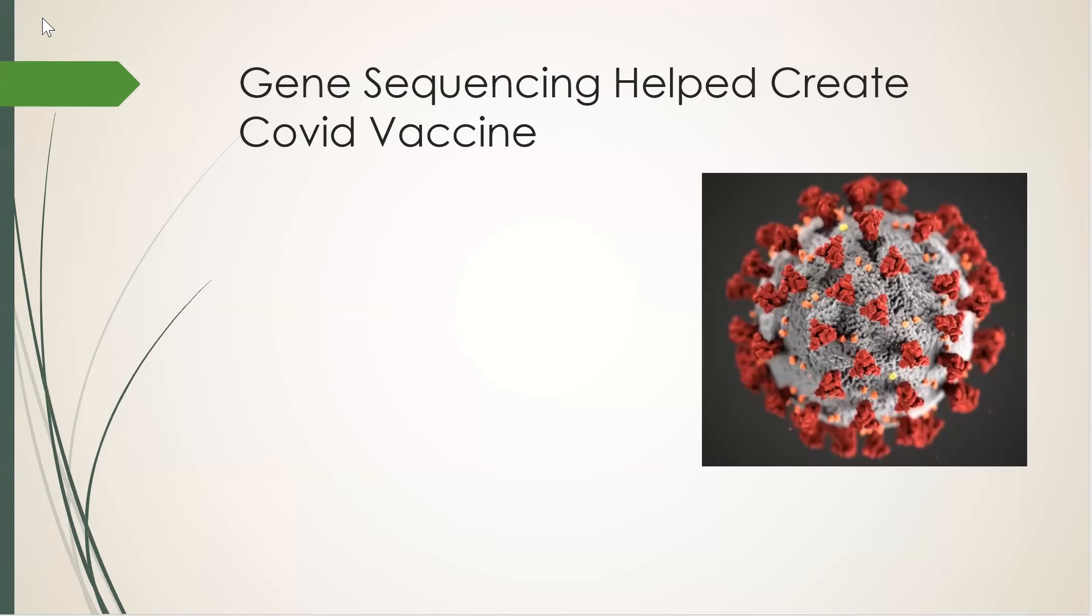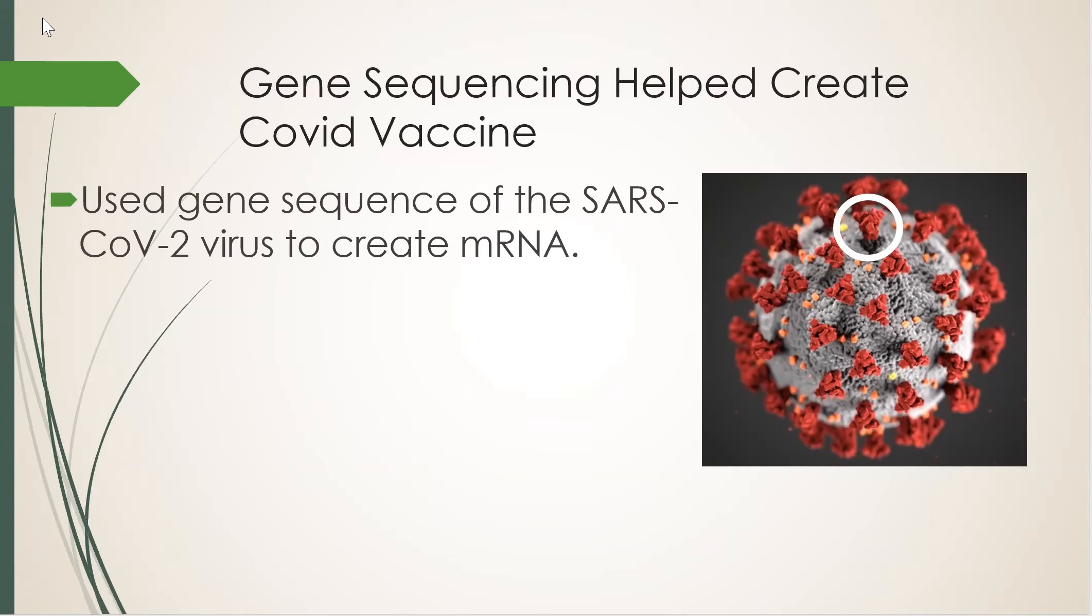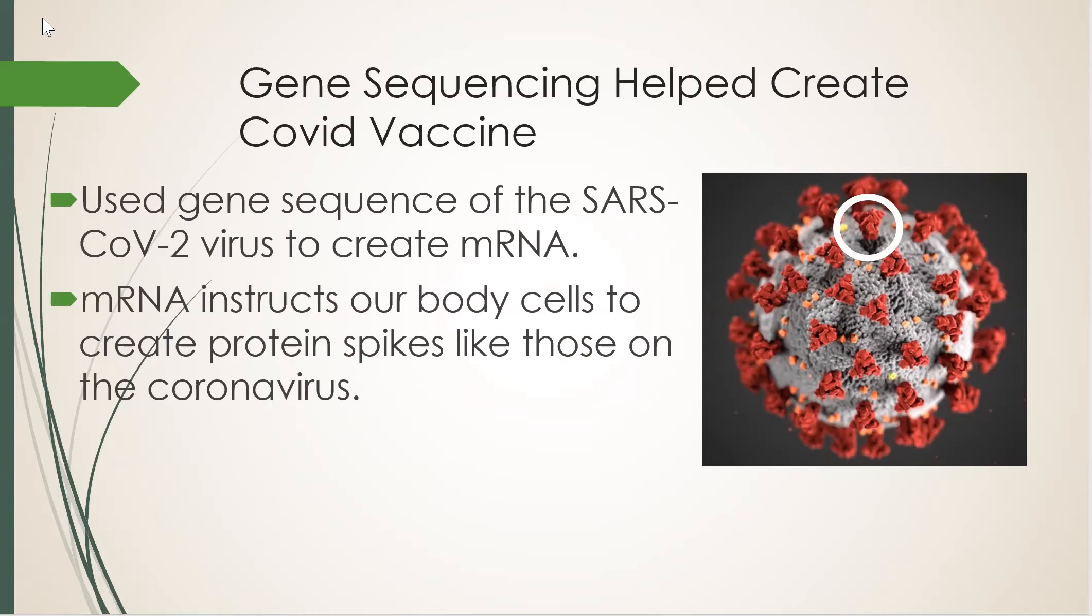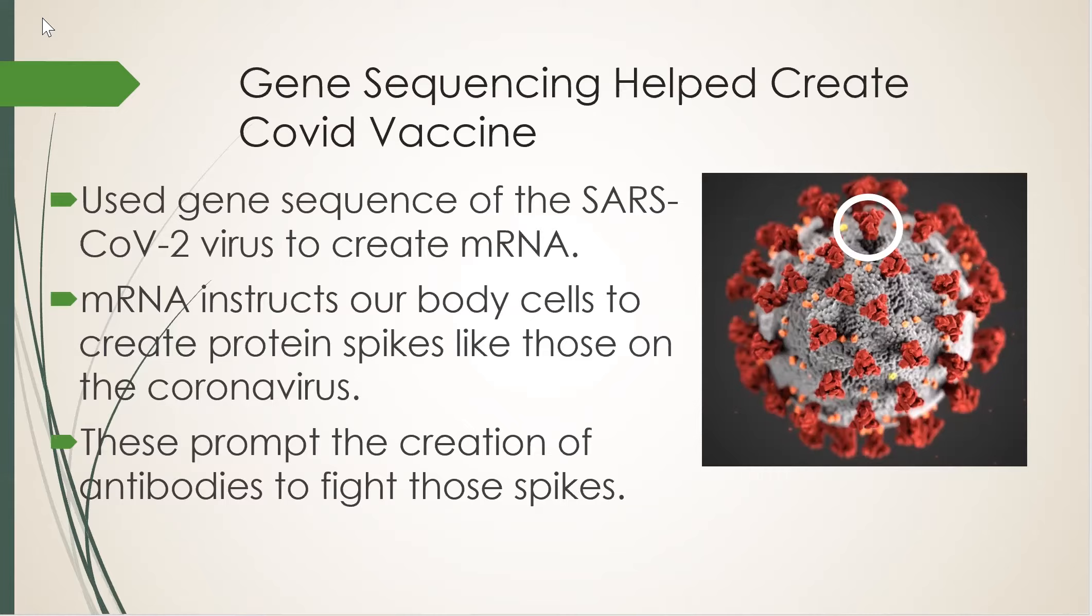You have all seen pictures of the coronavirus with protein spikes sticking out of it. For the COVID vaccine, researchers obtained the gene sequence of the virus and based on that, created a corresponding messenger RNA or mRNA. That mRNA is the vaccine. It tells our cells to create protein spikes just like those on the coronavirus. The presence of these protein spikes prompts our immune system to create antibodies to fight those spikes, thus helping defeat the virus if and when they come around.